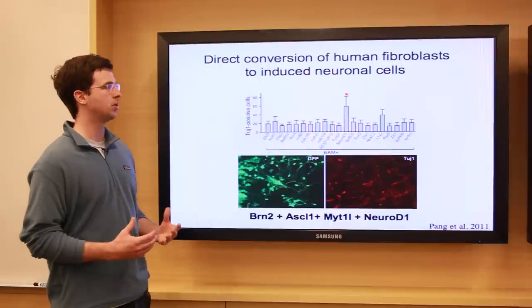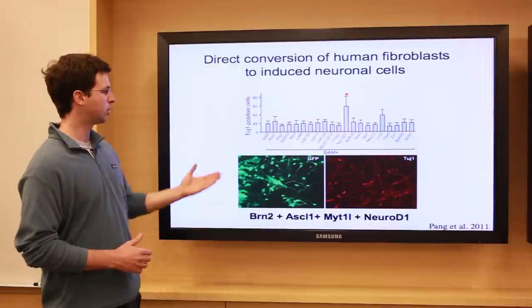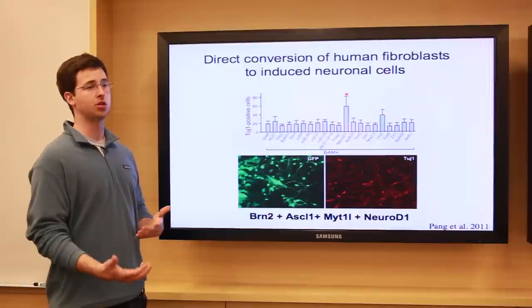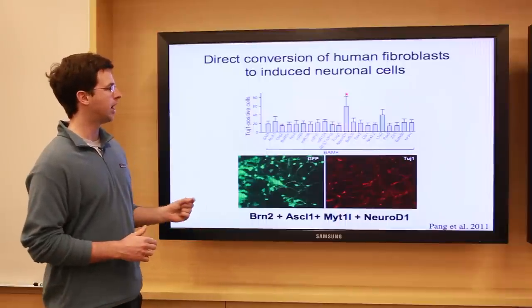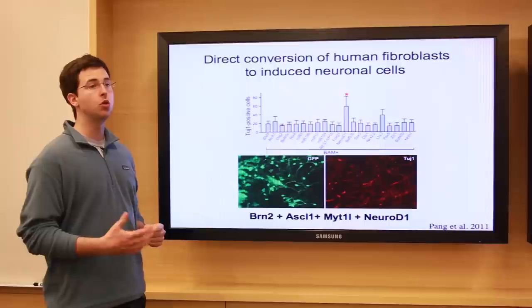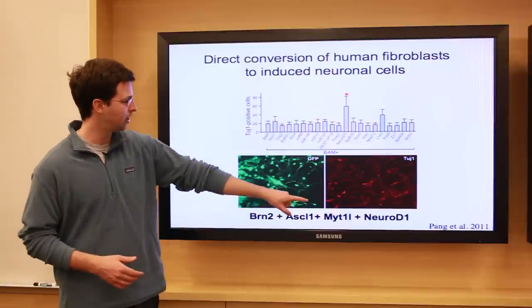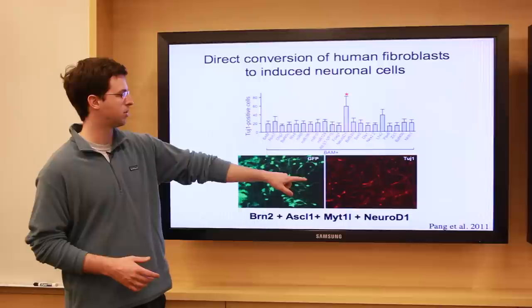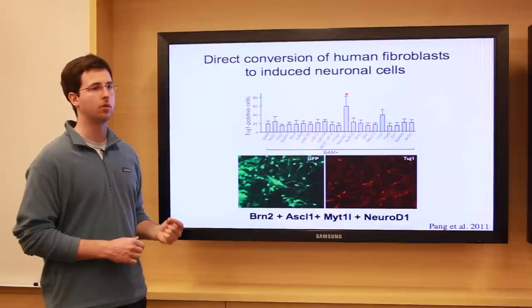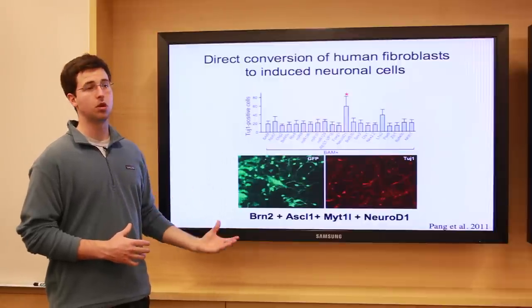Initially it was not working as well with human cells as it did with mouse cells using the analogous three transcription factors. So we screened for additional candidates that might improve this process and allow us to more efficiently generate human neurons directly from fibroblasts. We found that a gene called NeuroD1 was able to increase efficiency two to three fold in terms of how many neurons we can generate from fibroblasts. The combination of these four genes allowed us to generate neuronal cells from human fibroblasts — from embryonic human fibroblasts and also from perinatal human tissue.